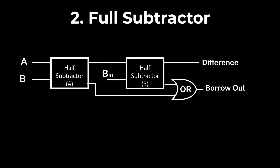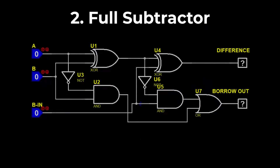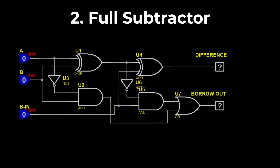We can make a full subtractor by connecting two half subtractors back to back with one OR gate. The boolean expressions of a full subtractor are: Difference = A XOR B XOR Borrow_in, and Borrow_out = (NOT A)·B + (NOT A)·C + B·C.